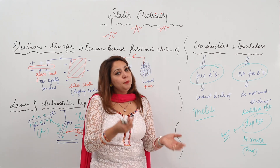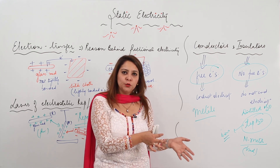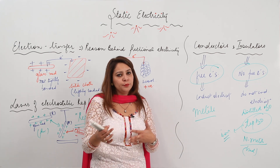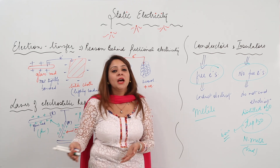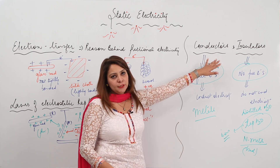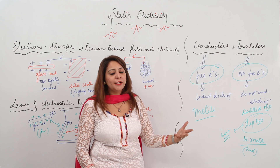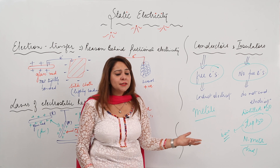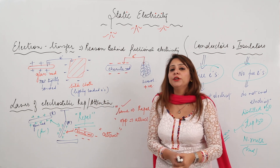The presence of free electrons makes a substance a conductor, and the absence of free electrons makes it an insulator. When electrons are tightly bound or unavailable for transfer, the material does not allow current to pass — it is an insulator. No flow of electrons means no electric current, so that means it is a poor conductor — an insulator.